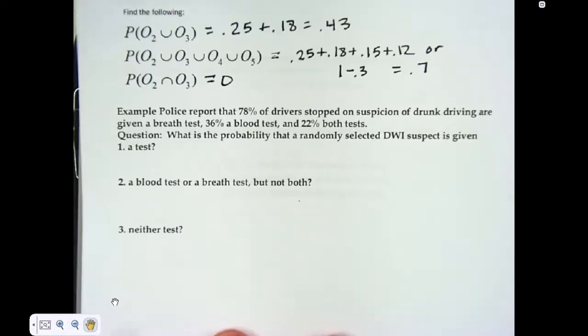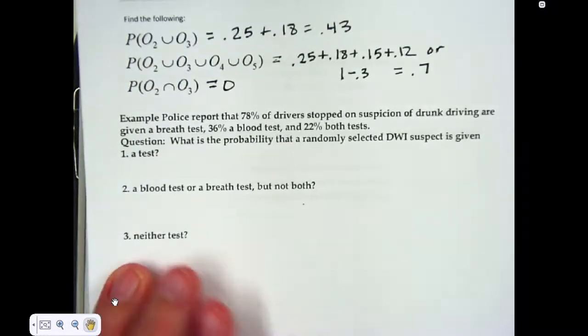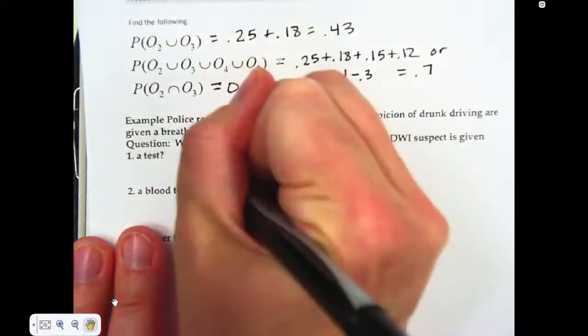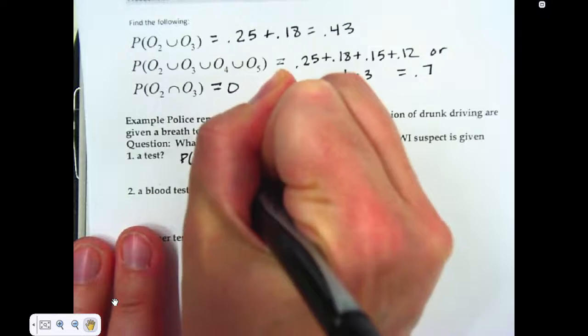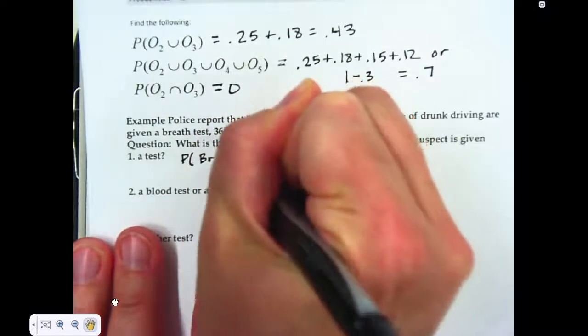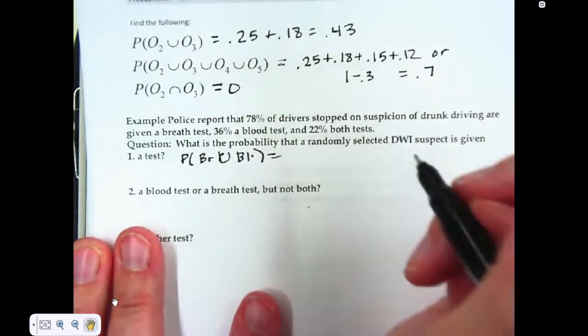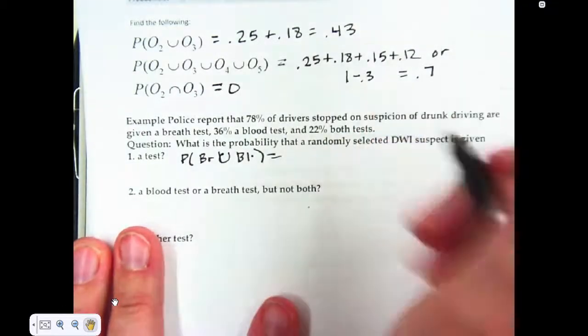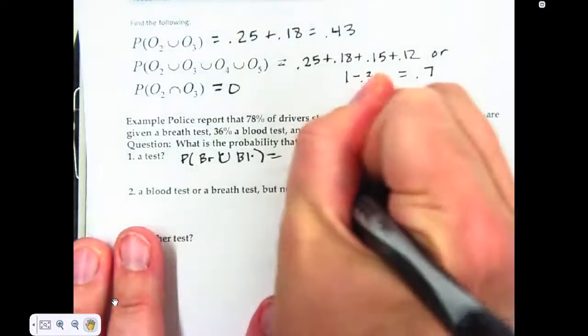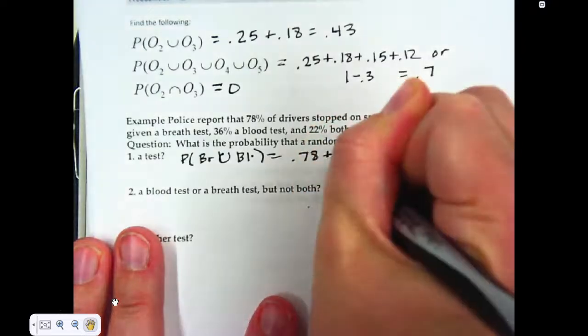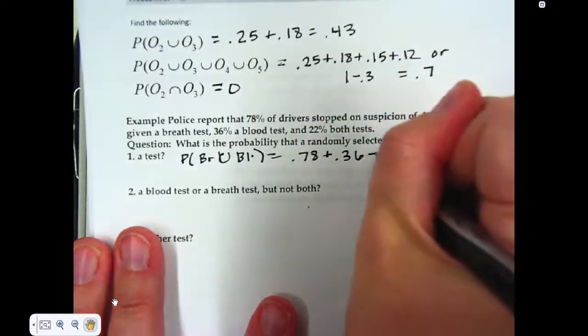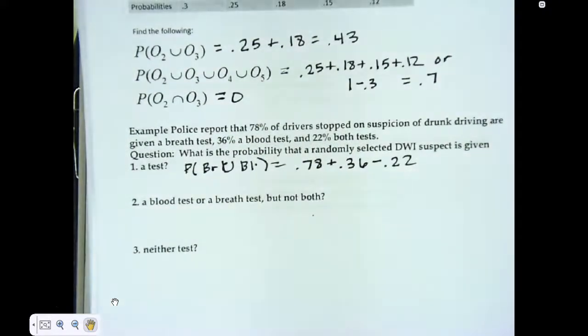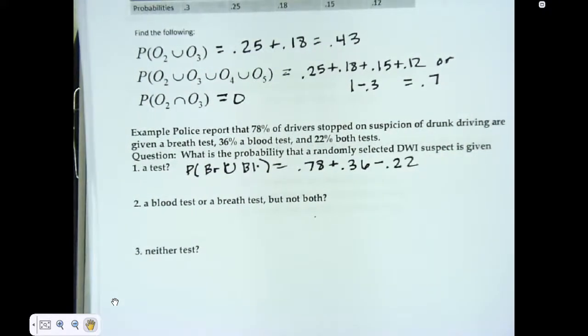For this one, they just want the probability of a test, so that's the probability of either or. I can say the probability of a breath test or a blood test. The probability of a breath test is 0.78. The probability of a blood test is 0.36. And then you always have to subtract the probability of them both. So I'm going to do that math.